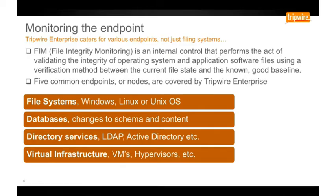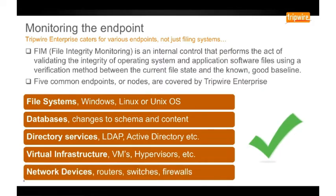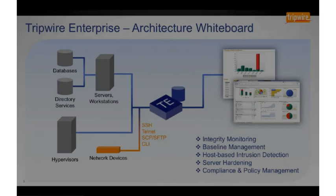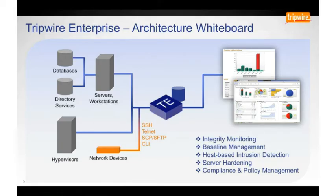With regards to virtual infrastructures, we not only sit on the VMs as a file system agent, but we can also monitor the configuration of the infrastructure, such as the reconfiguration of virtual machines. And finally, network devices: through a command line interface, Tripwire Enterprise can connect to many different types of network devices such as firewalls, routers, and switches, pulling back information such as firewall rules, access control lists, and configurations. Tripwire Enterprise sits as an application hosted on a server. Its configuration and captured metadata is stored in a backend database. Agents are then deployed to file systems, and connectors from those file systems tie into databases and directory services. We connect to network devices via command line interface over SSH, Telnet, or other protocols.